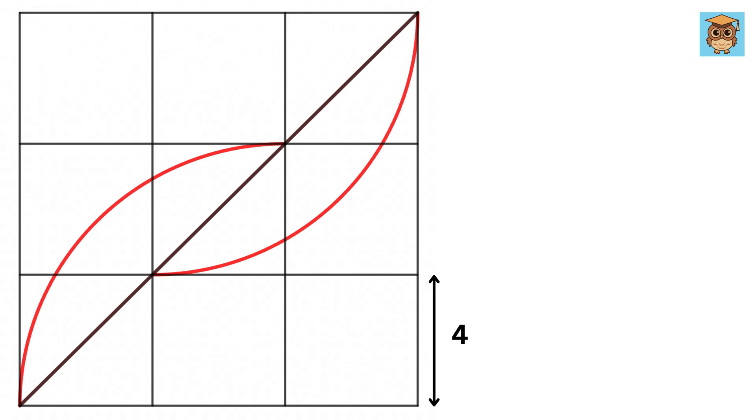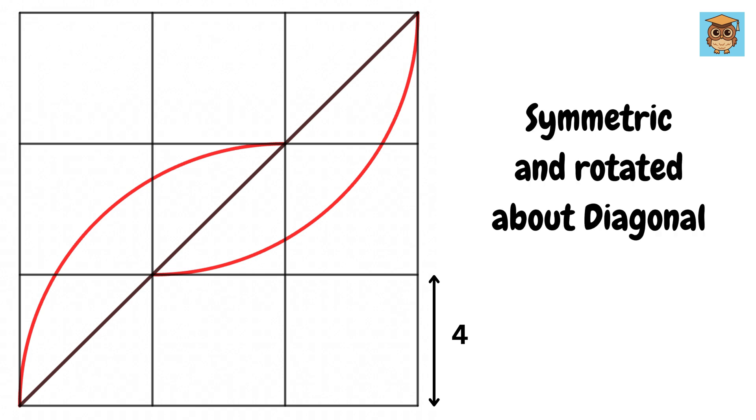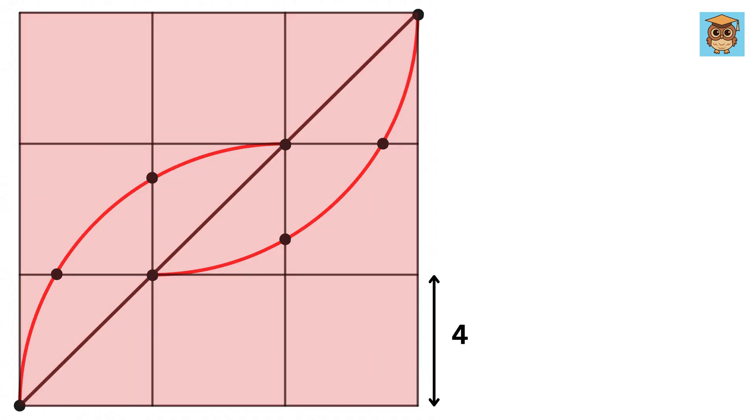First, if you observe here closely, only these two curves are symmetric and rotated about the diagonal. You see this point of this curve corresponds to this point of this curve. Similarly, both these points correspond to each other, then these points, and then these points. So it is as if this big square, if rotated, then this curve will become this one.